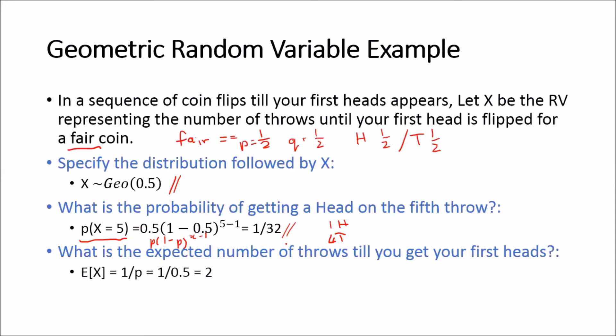What is the expected number of throws until you see your first heads? Well, if we know that the expected value of X is equal to 1 over p, and p is equal to 0.5. So we know that the expected number of throws until we observe our first head is simply going to be 1 over 0.5, which is equal to 2. I should have rather written it as 1 over 1 over 2 instead, which gives 2.